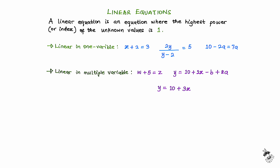The same analysis can be done for the third example. The unknown variable here is a, appearing twice, which means we have only one unknown variable. When we check the power of this unknown variable, we have 1 and 1. Hence, this equation is also linear in one variable.